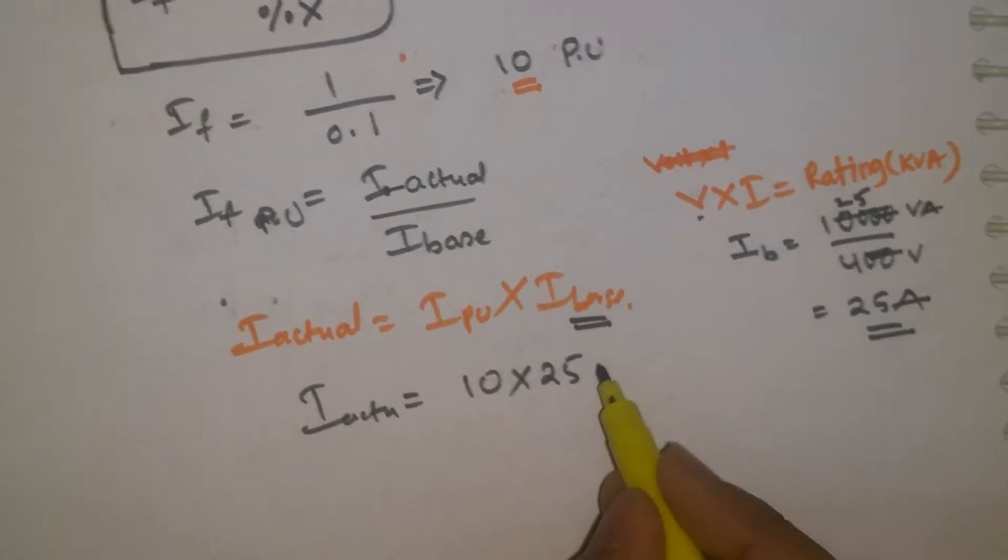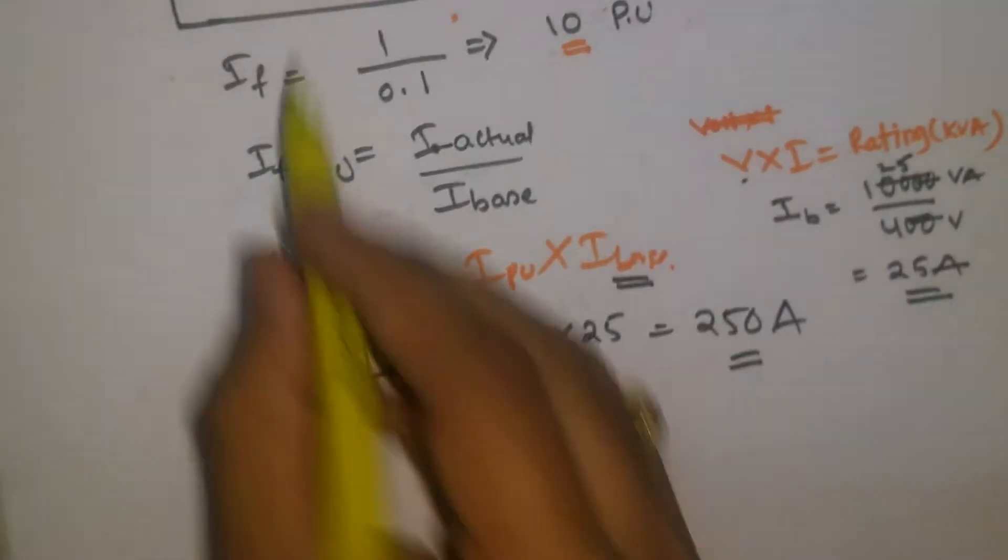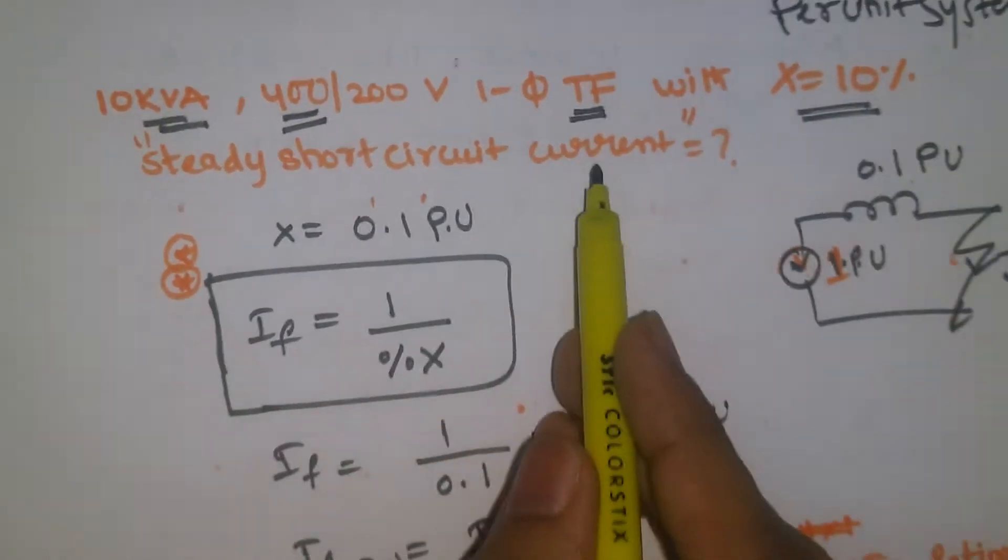See, I actual is 10 per unit into 25 amps, so 250 amps is the steady short circuit current.